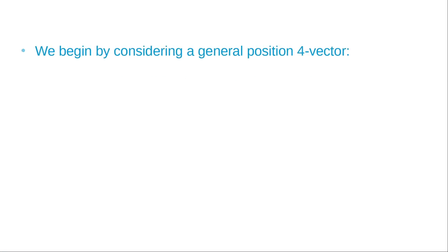We'll begin by considering a general position 4-vector. This is signified by x mu. In this case, we're using a superscript instead of a subscript. This is not an exponent. This mu generates numbers 0, 1, 2, and 3.